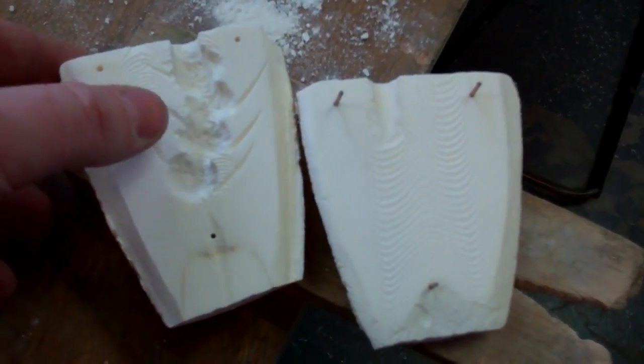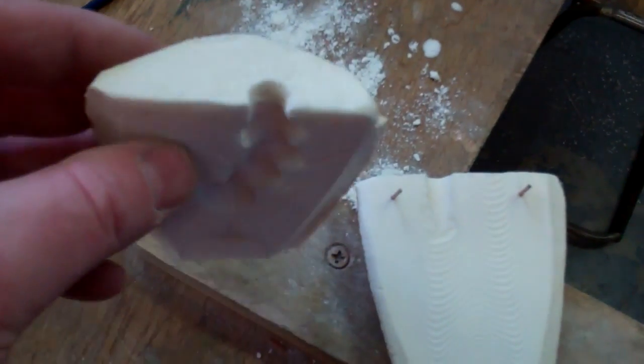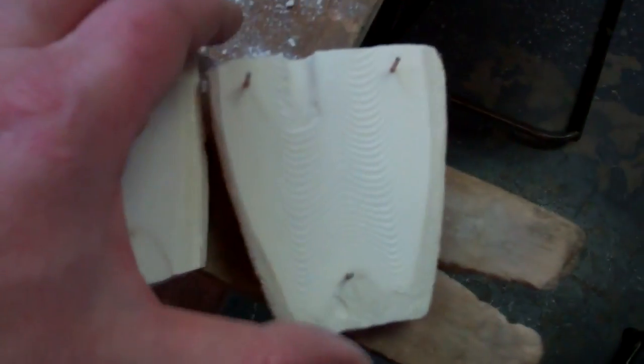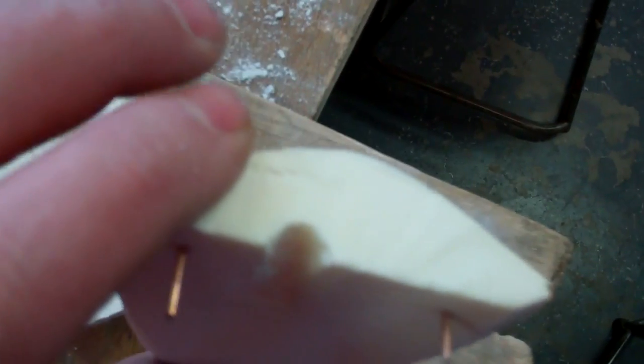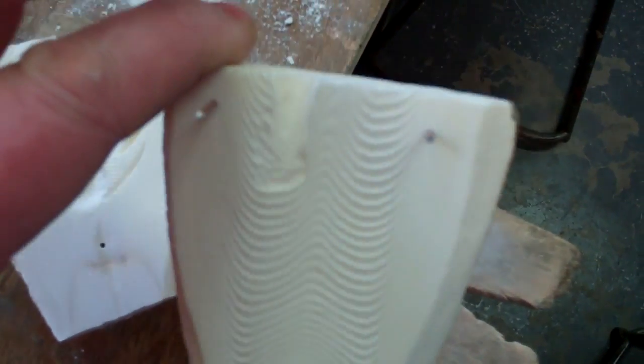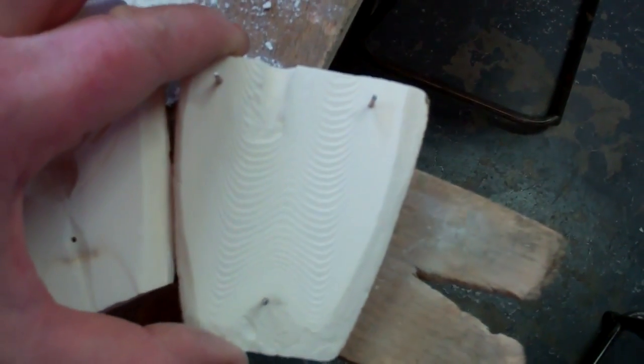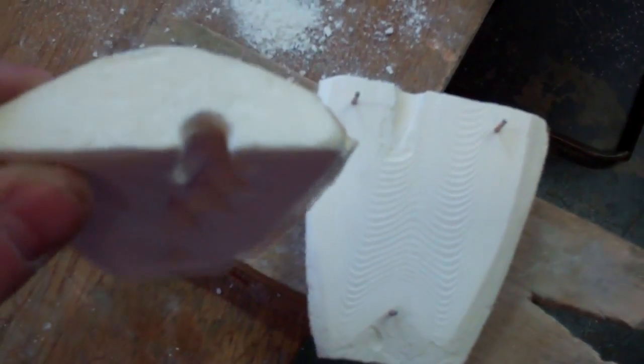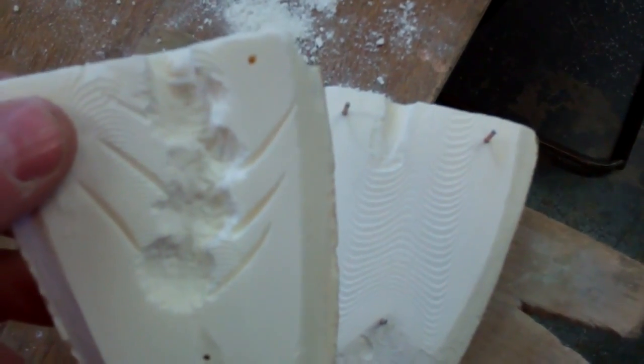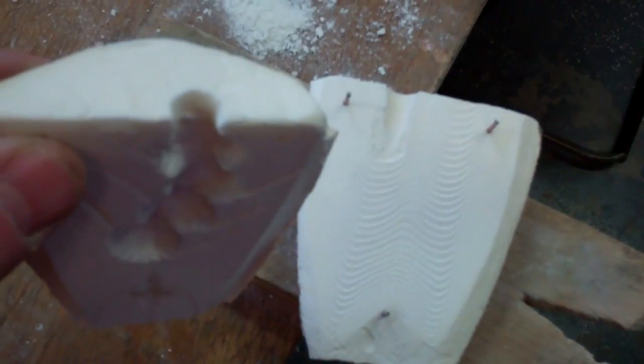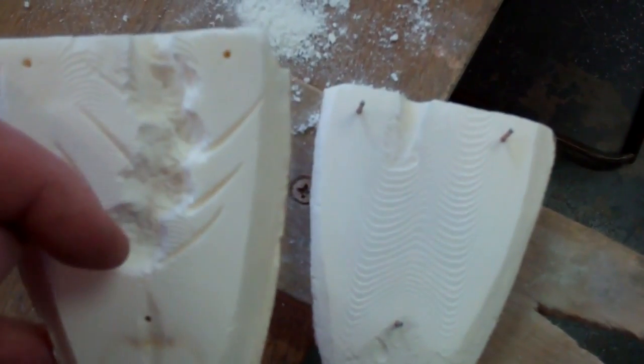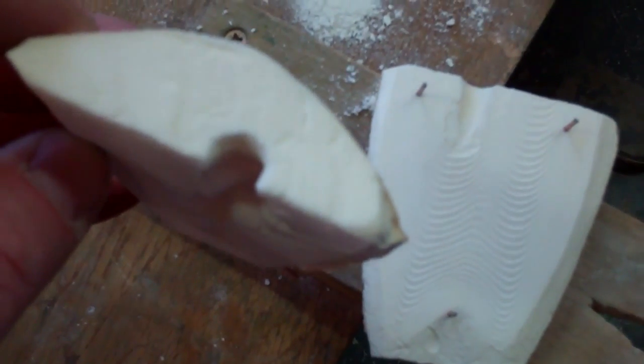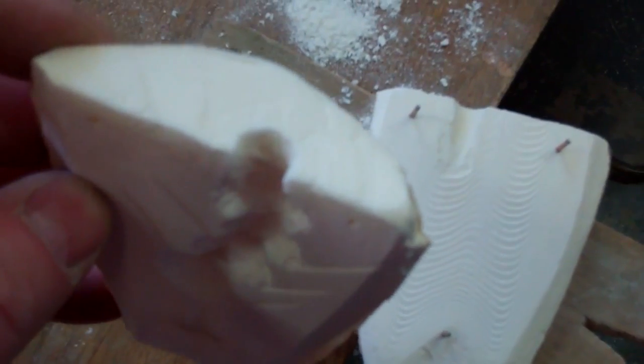The two halves have been brushed to bring out the texture, and a substantial pour hole carved into the top on both halves. It's important that the hole is reasonably substantial because you don't want the metal to choke when it's poured in. If it chokes and blocks up it will freeze and the metal won't pour all the way down to the bottom.